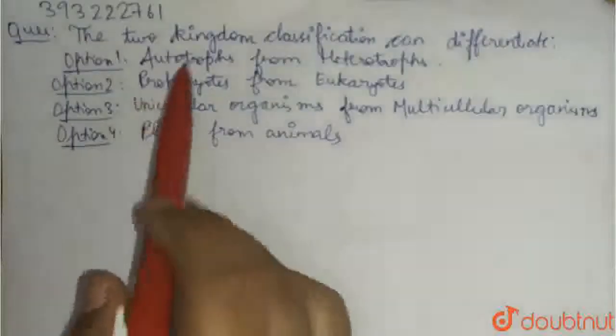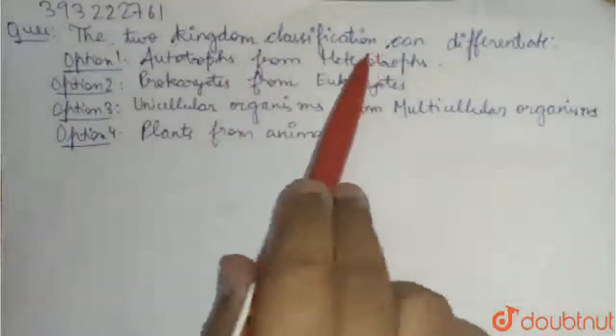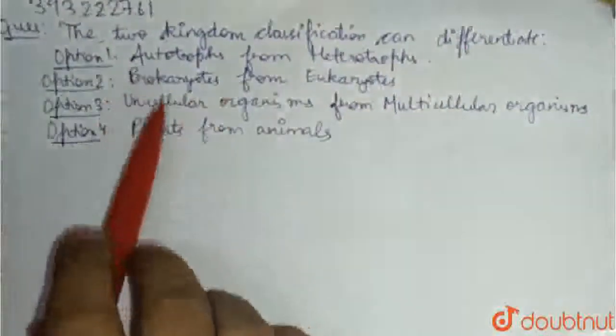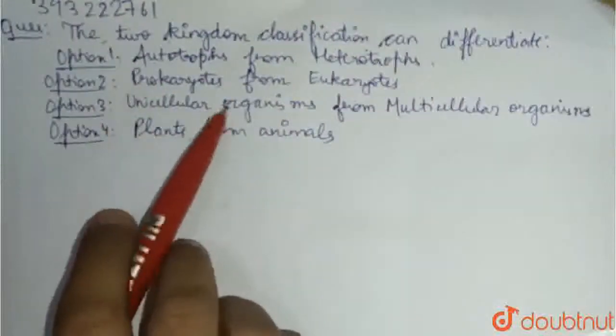Hello students, our question is: the two kingdom classification can differentiate — and we have four options given, from which we have to choose the correct option.